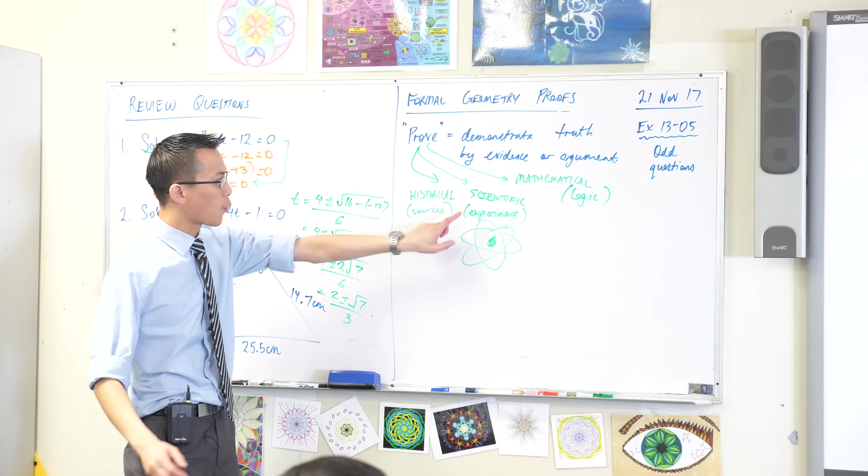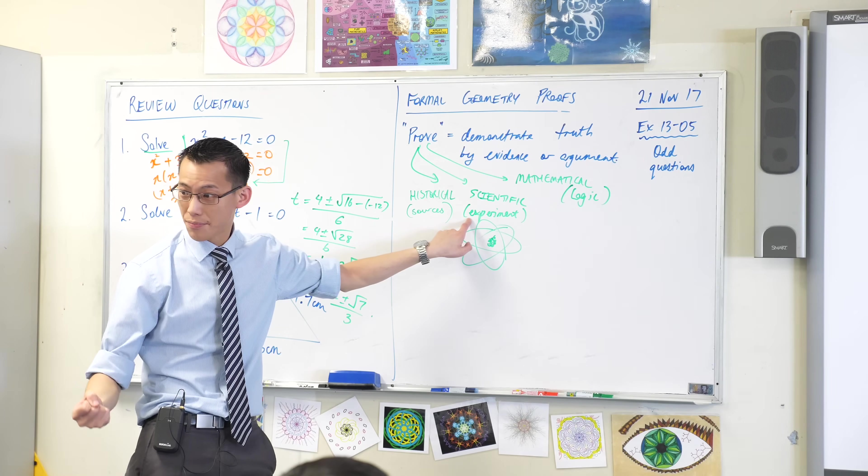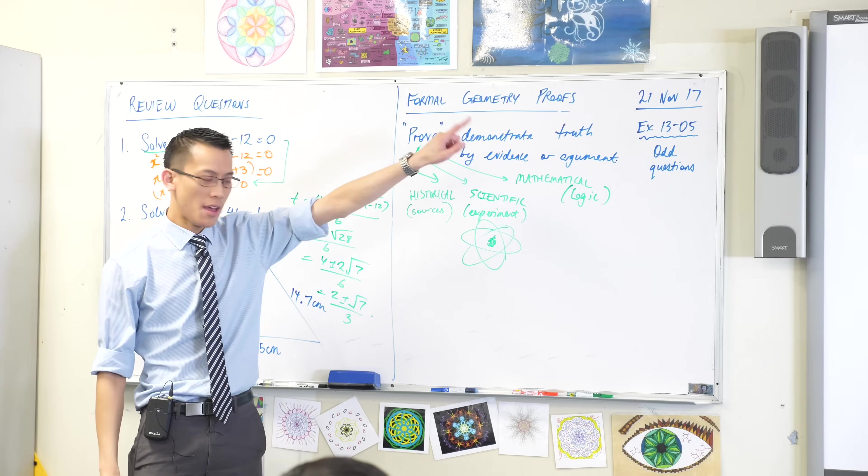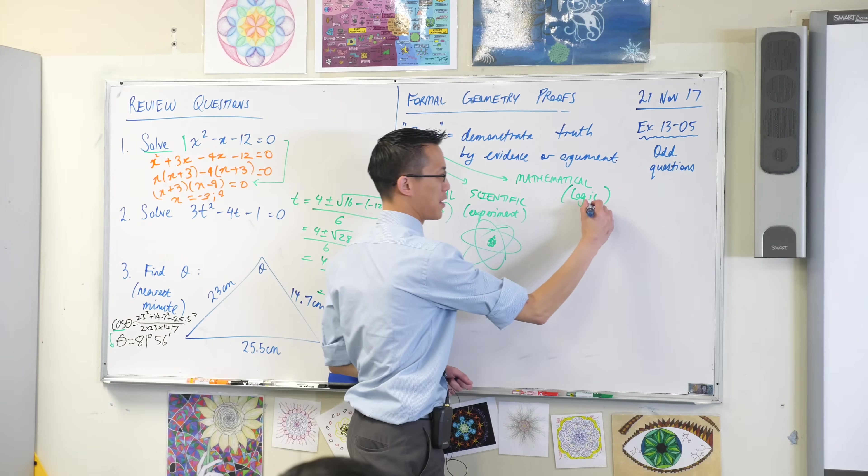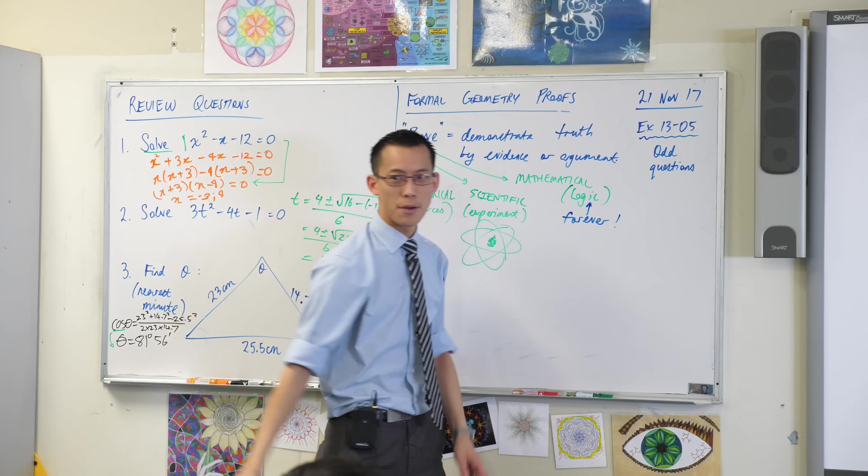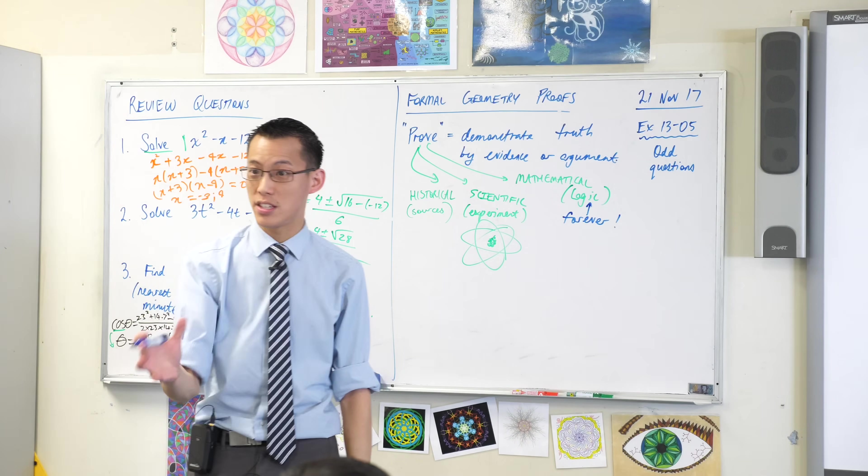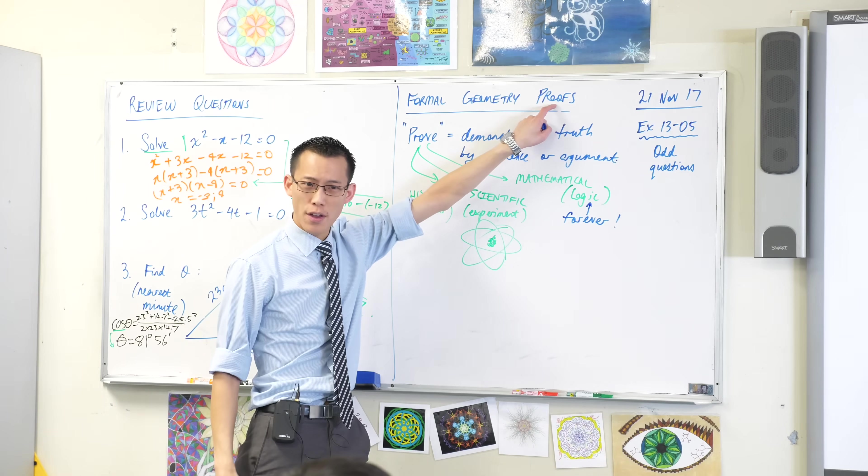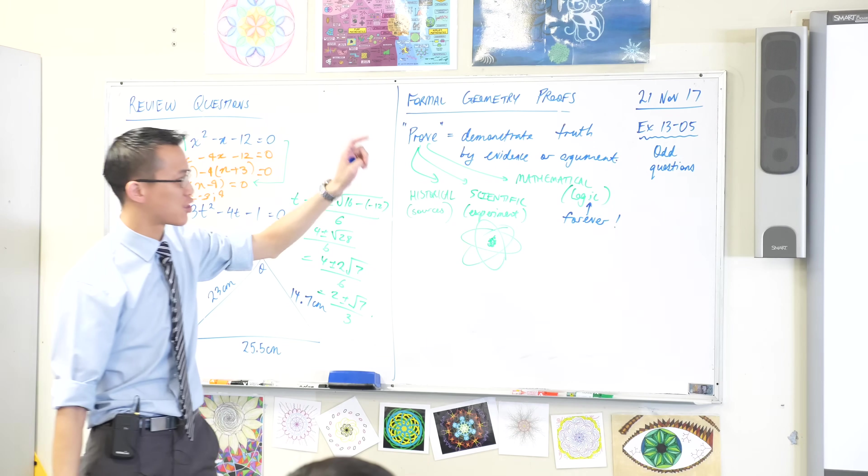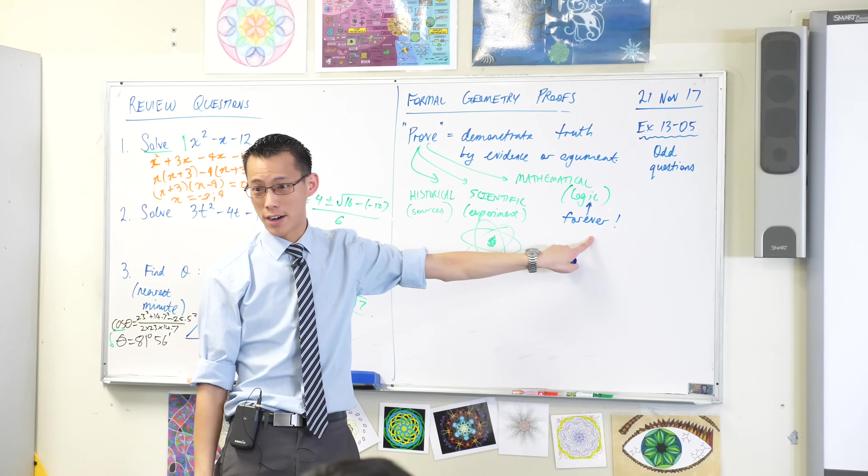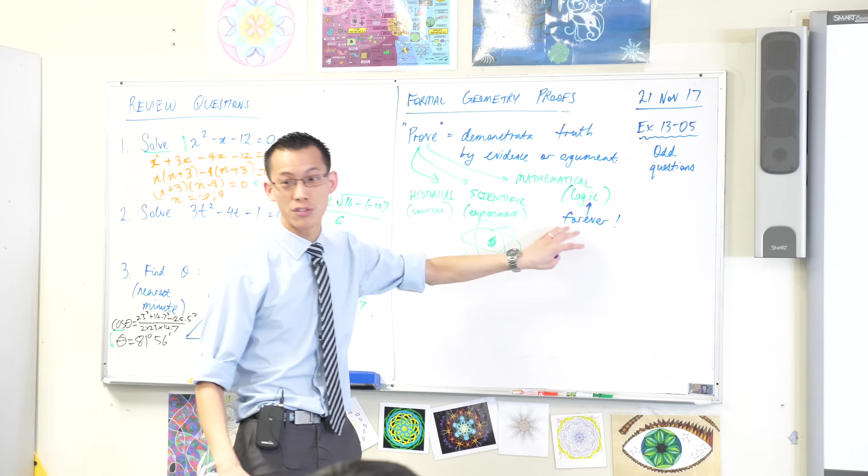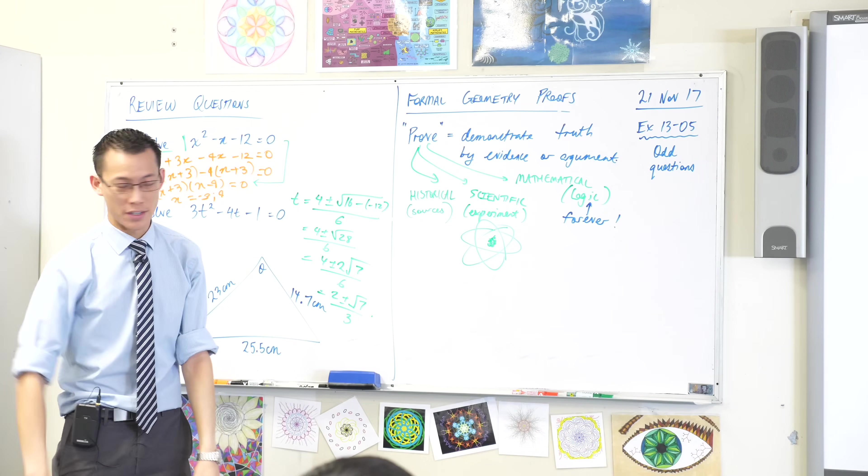So we experiment better, so we disprove things. But mathematics is different because logic can never be disproven. That's what sets us apart. That's why we are so obsessed with proof. Because proving things in mathematics, once you prove something in mathematics, it's true forever. It's never disproven. It's why we still look at Pythagoras. Pythagoras' theorem is just as true today as it was the day it was written.